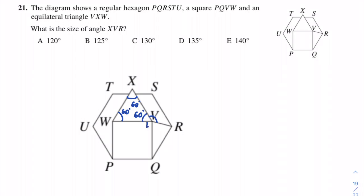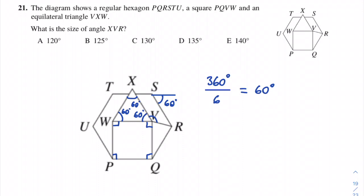PQVW is a square, so each of these angles is a right angle at 90 degrees. We can also work out the interior angle of the hexagon by first finding the exterior angle: 360 degrees divided by 6 equals 60 degrees. Since TS is a straight line, we do 180 minus 60, which gives us 120 degrees for this interior angle.